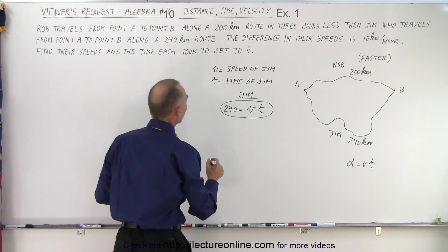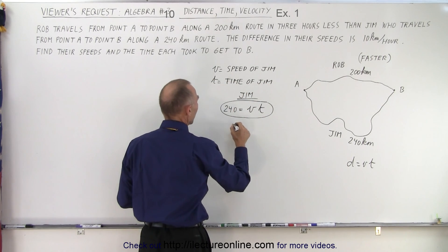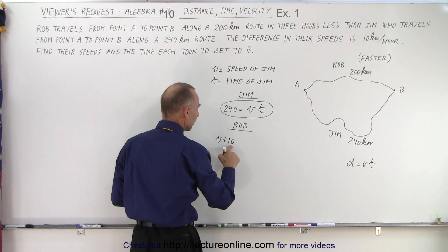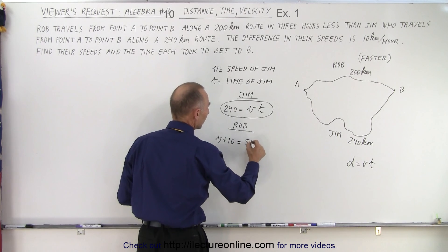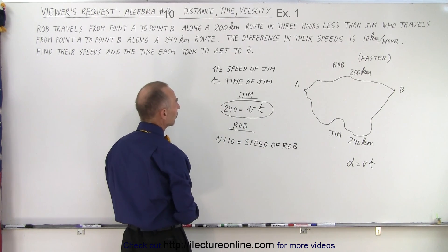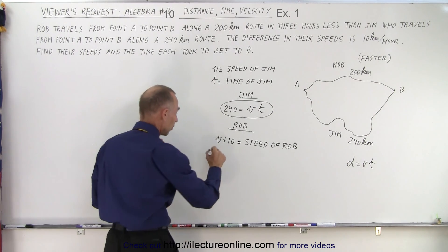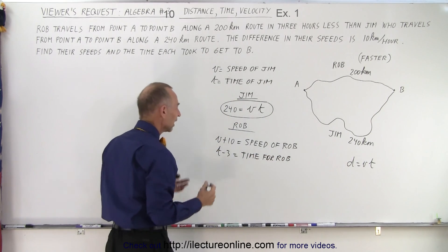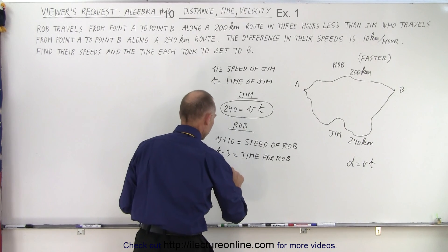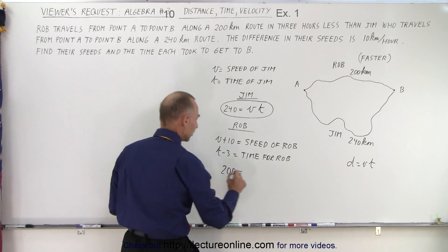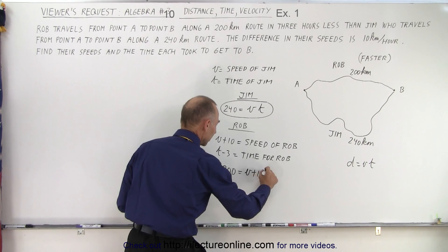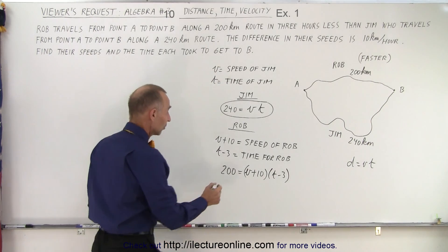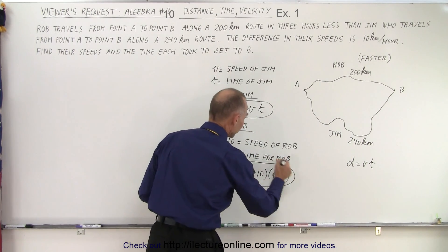So if that's the case by 10 kilometers per hour then for Rob, V plus 10 is equal to the speed of Rob. And the time takes three hours less so T minus three is equal to the time for Rob. And so the equation D equals V times T becomes 200 equals V plus 10 times T minus three. And now we have two equations that we have to solve simultaneously.